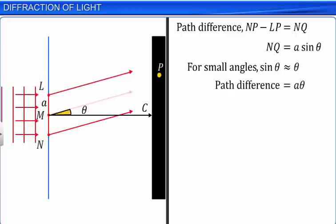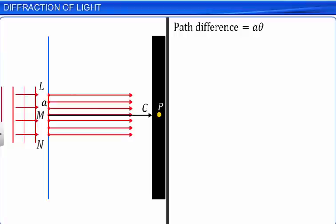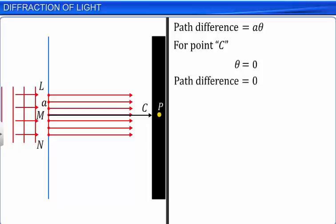Now we shall analyze how contributions from a large number of sources produce diffraction fringes on the screen. Consider the central point C. From the figure, angle theta is 0 for point C. This means waves from all the point sources reach C in phase, and hence all path differences are also 0. Waves from all parts of the slit contribute in phase at C, interfere constructively, and produce maximum intensity at C.